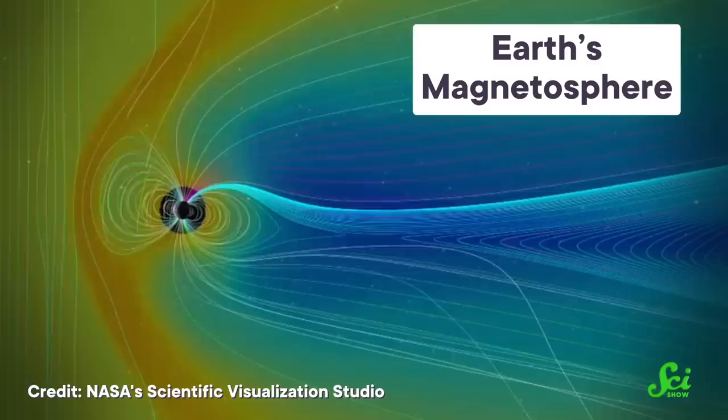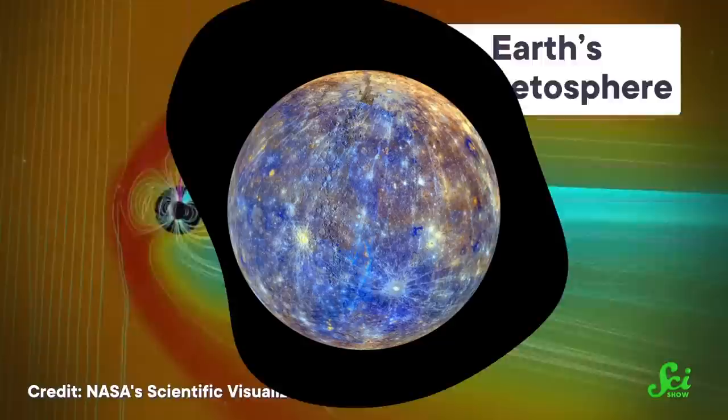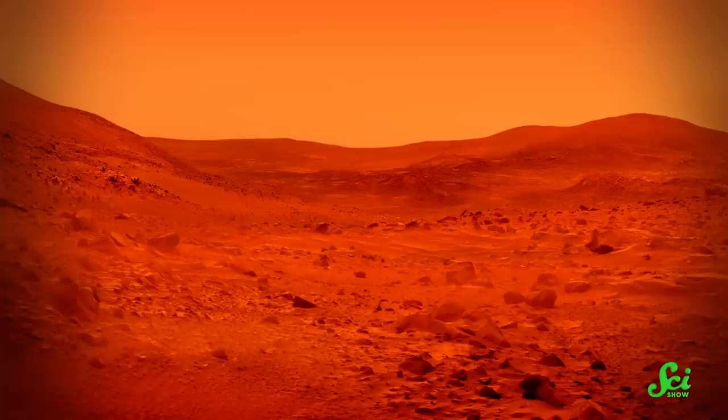But not all worlds have a magnetic field or a respectable atmosphere. In places like these, harmful radiation can make life all but impossible, unless they had some other kind of shield. And that's why some astronomers are interested in ice.